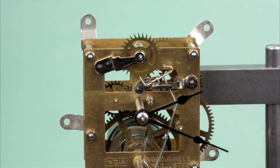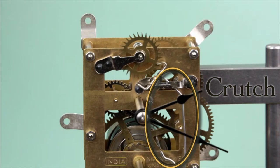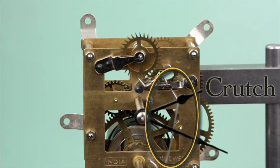The pendulum assembly is connected to the escapement through the crutch. The crutch, connected to the anchor, is how the escapement provides power to the pendulum to keep the pendulum swinging.